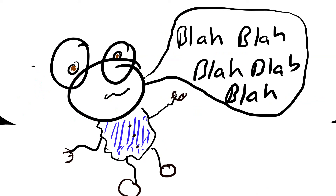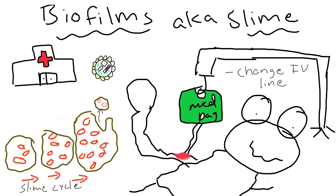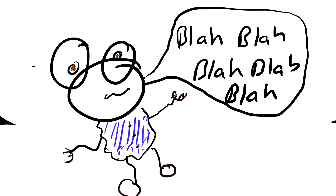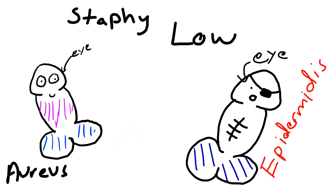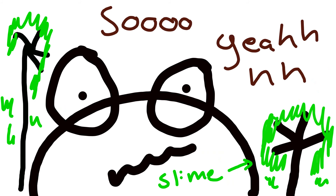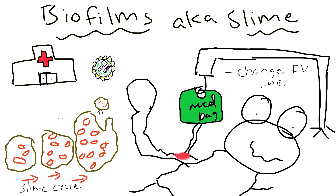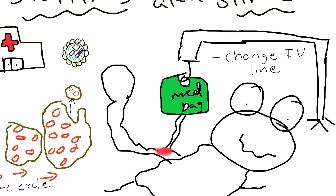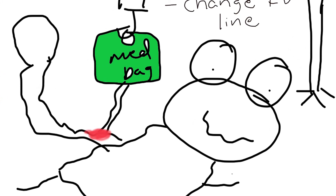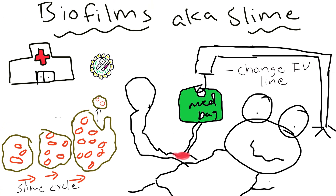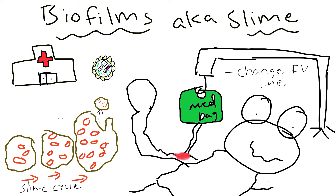Another problem Staph epidermidis causes is biofilms, also known as slime, formed through quorum sensing — where bacteria get together, release chemicals signaling each other to produce a slime layer that protects them from the immune system and antibiotics. This is a major problem for IV drug users, diabetics, or anyone with a peripheral or central line left in too long. If you look at the line site, you might see redness and warmth, and in bad infections, septic symptoms and fever. The very first thing to do — even as a medical student — is remove the line.